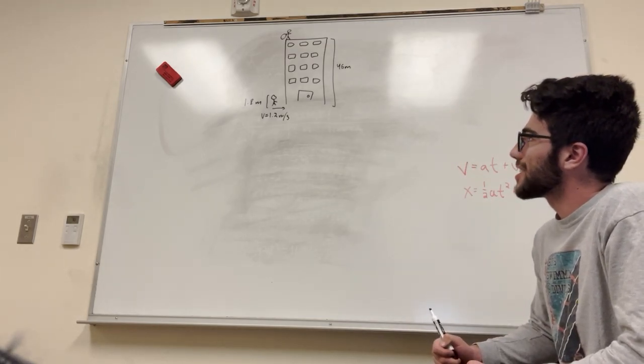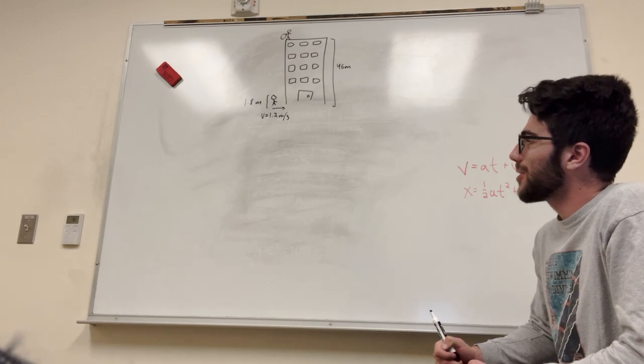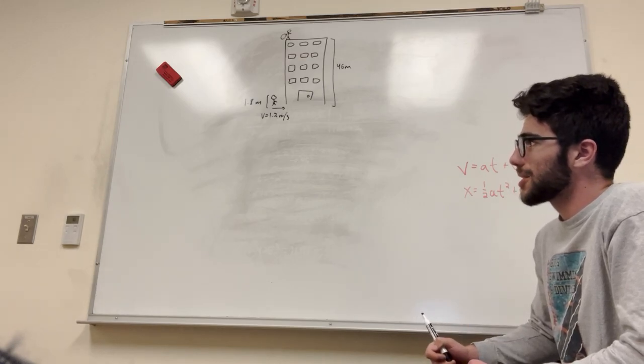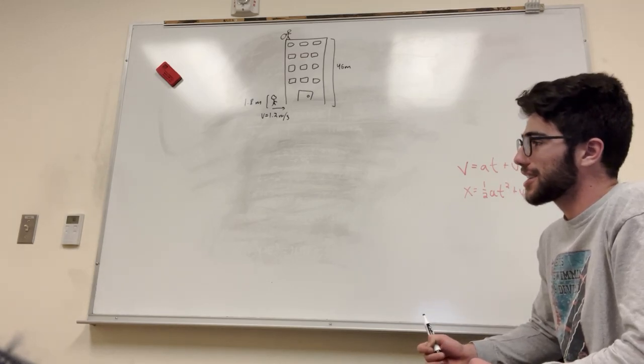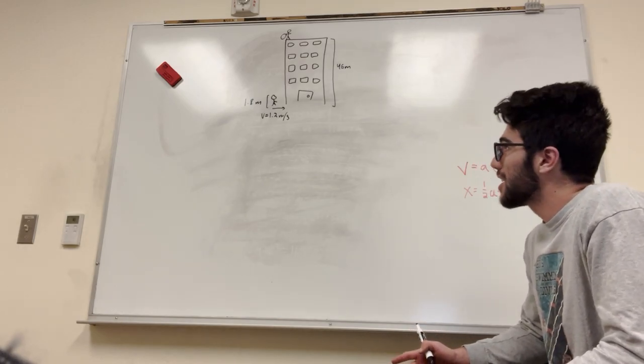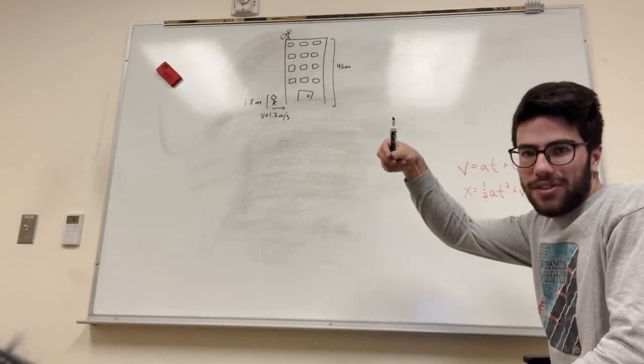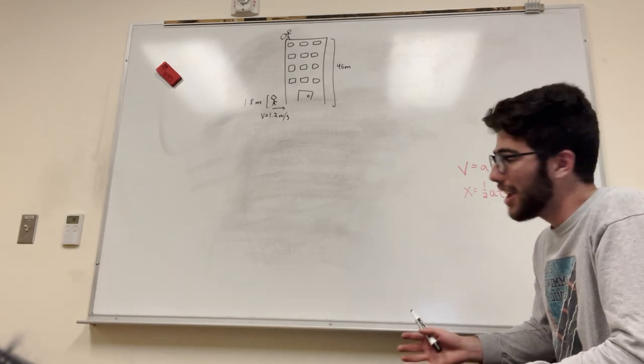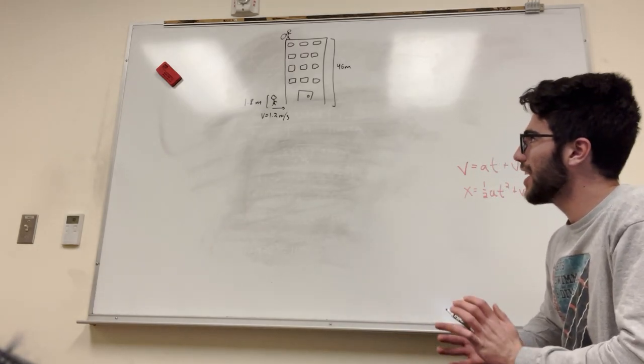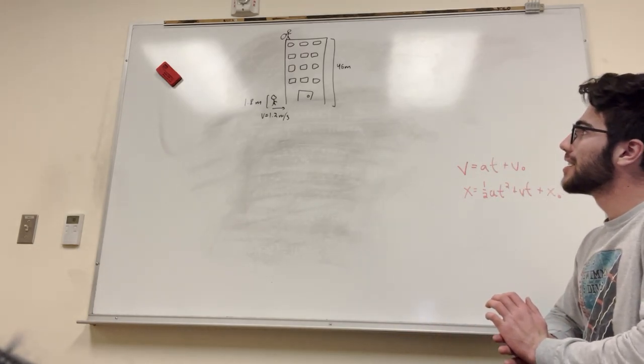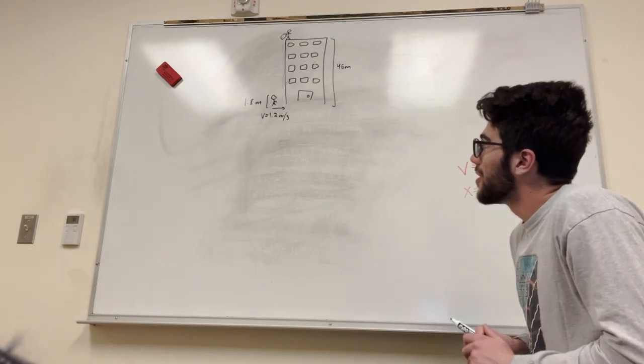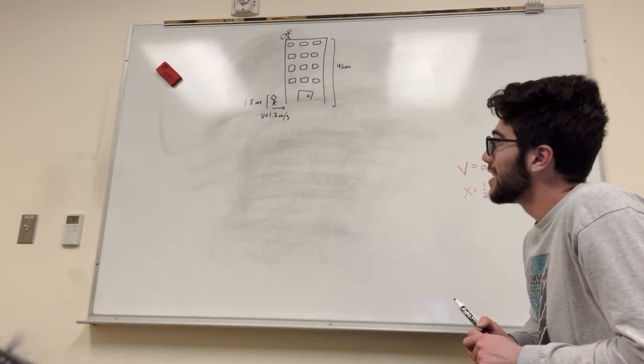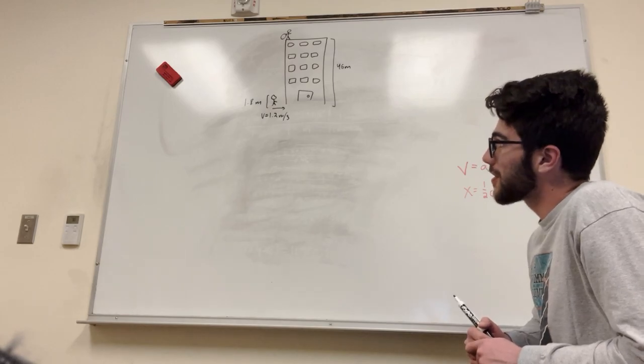So, what do we need to know for this? In order for us to tell how far the physics professor needs to be away from the building, we need to know how many seconds it's going to take for the egg to fall onto his head. That's the first step. Let's find out how long it's going to take. Let's first think about this. Are we waiting for it to fall on his head or his feet?